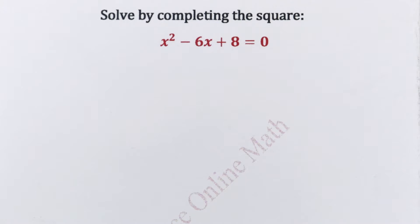Welcome to Calvin's Align Math. Let us look at this nice equation. Solve by completing the square: x squared minus 6x plus 8 equals 0.